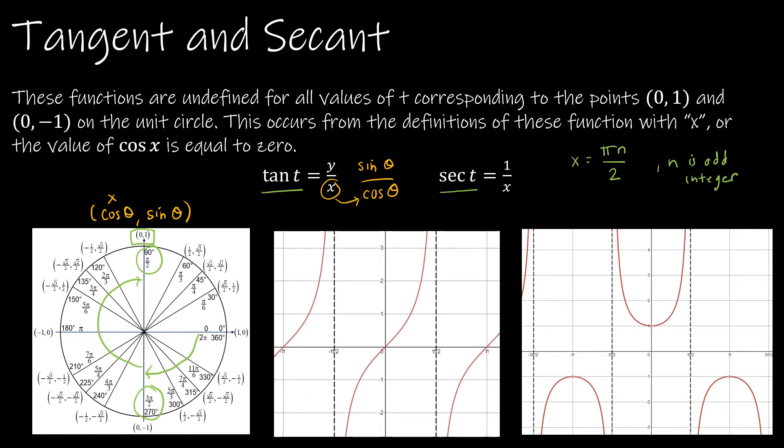And you can see that both for tangent, negative pi over 2, positive pi over 2. If I continued, 3 pi over 2, and so on. And you can see it here as well for secant. Negative 3 pi over 2, negative pi over 2, pi over 2, and so on.